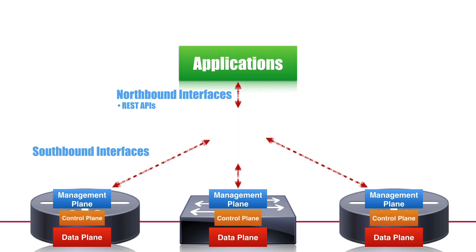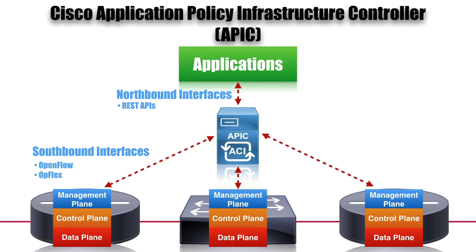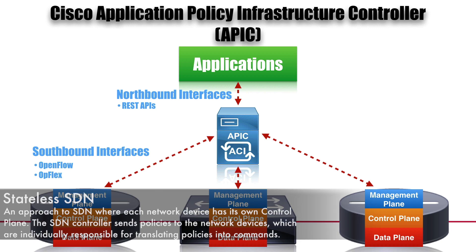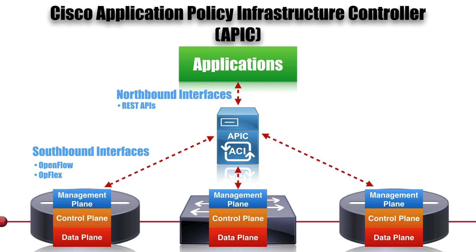However, Cisco takes a bit of a different approach with their controllers. With the Cisco APIC — the Application Policy Infrastructure Controller — and the APIC-EM, where EM stands for Enterprise Module, the control plane stays back down in the devices. Cisco argues this is a better solution compared to having the control plane live in the SDN controller. Here, the controller is a stateless controller. It pushes policies down to the devices, and it's the device's responsibility to convert those policies into corresponding commands. Cisco says you could actually lose your controller, it could go down, and your network would keep running, because the control plane doesn't live there.